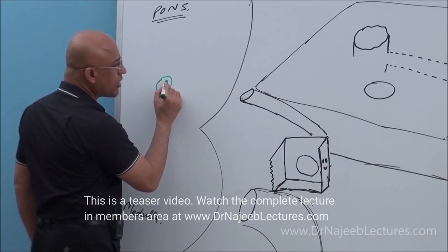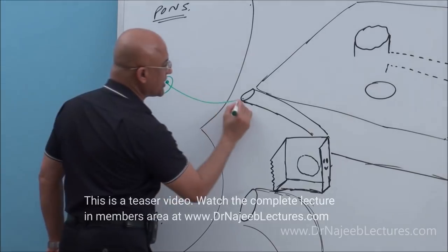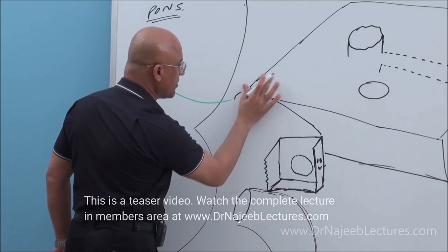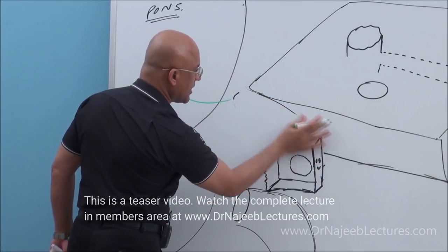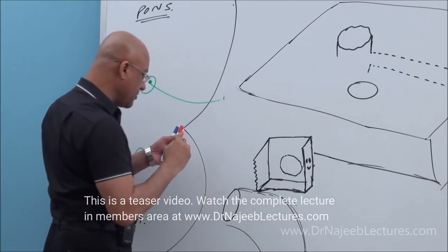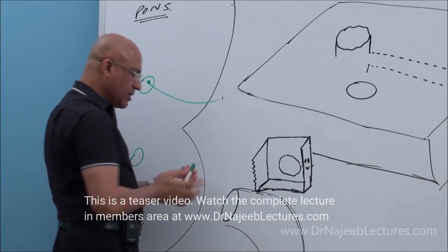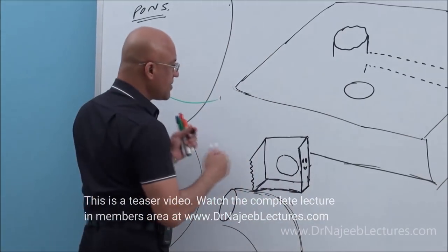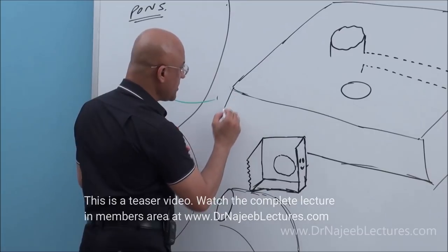Here is your superior salivatory nucleus. The lesser petrosal nerve also has parasympathetic preganglionic fibers, but they come from the inferior salivatory nucleus. So in the lower part of the pons and upper part of the medulla there are two salivatory nuclei: the superior salivatory nucleus — giving fibers for the greater petrosal nerve — and the inferior salivatory nucleus, which gives fibers for the lesser petrosal nerve.